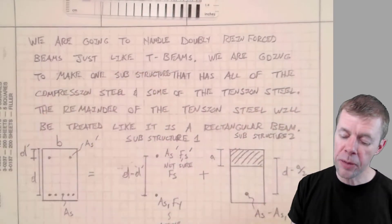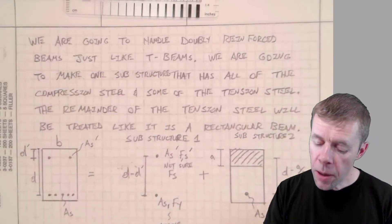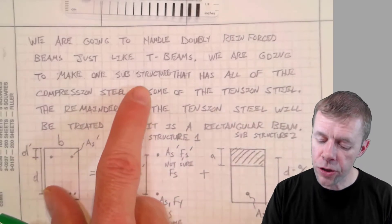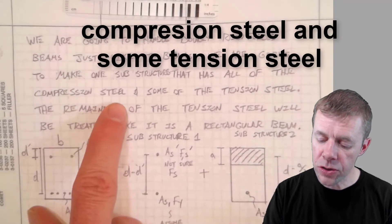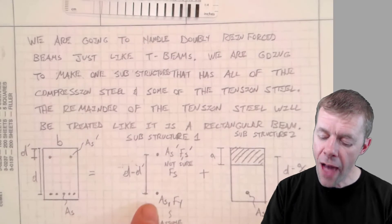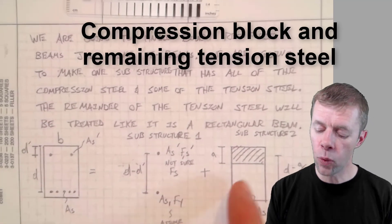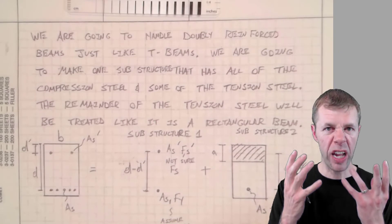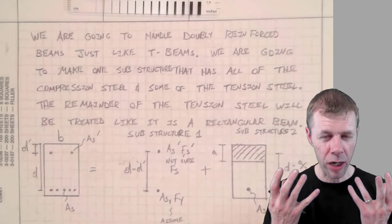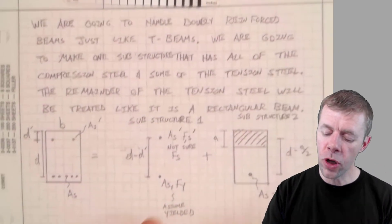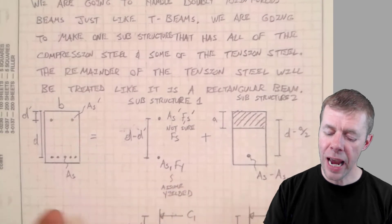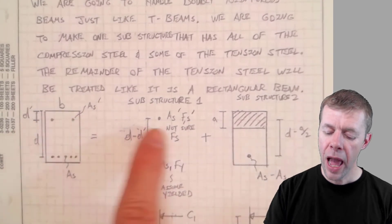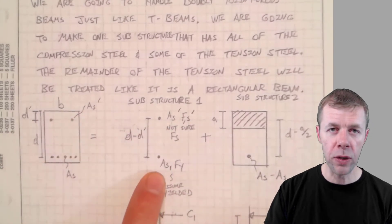We're going to handle double reinforced beams just like we did a T-beam. We're going to make one substructure that has all the compression steel and some tension steel and the remainder of the tension steel and the rectangular block at the top. What is he talking about? We're making two substructures. We're going to take the steel out of the top and we're going to balance it with steel at the bottom.